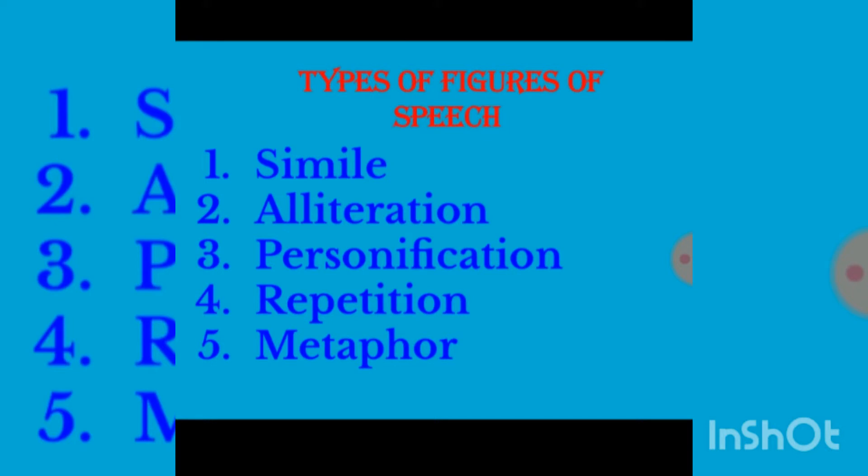The five types of figures of speech are: first, simile; second, alliteration; third, personification; fourth, repetition; and fifth, metaphor. Simile and alliteration we have already done, but we are going to cover them again.